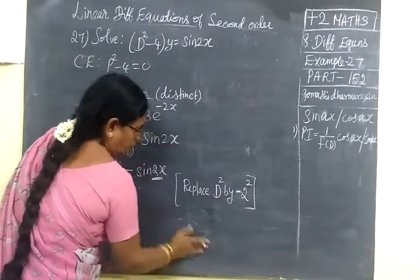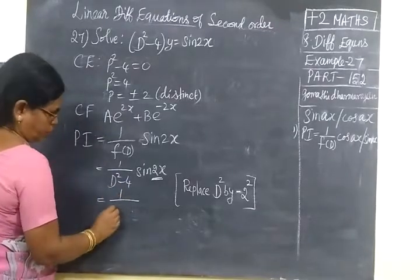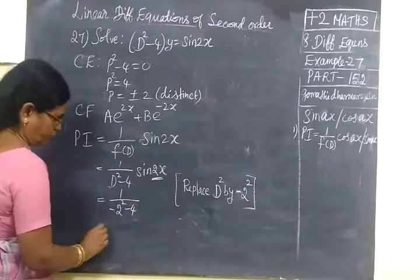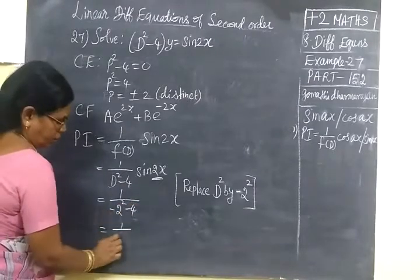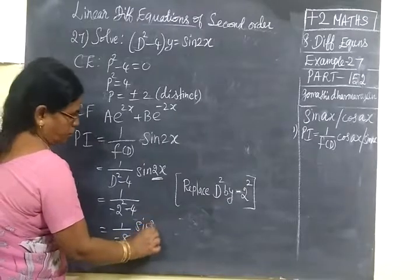So now we are writing 1 by minus 2 square minus 4. That is minus 8 sin 2x. So this is particular integral.